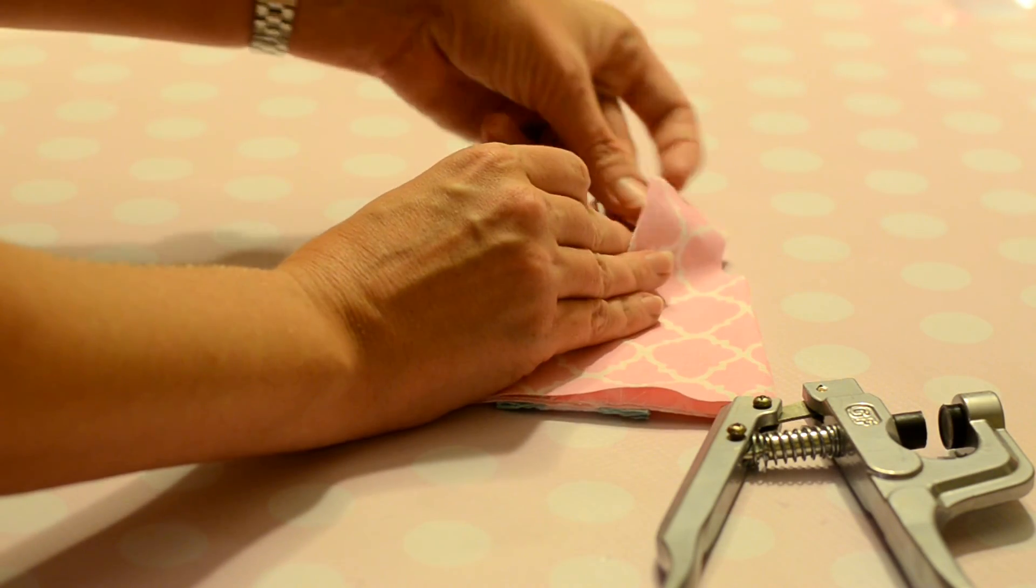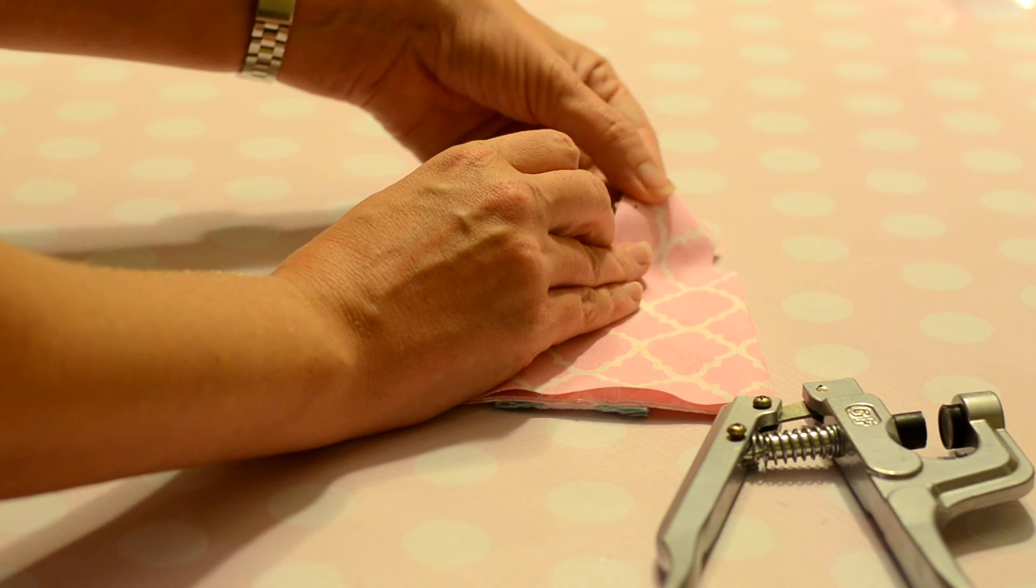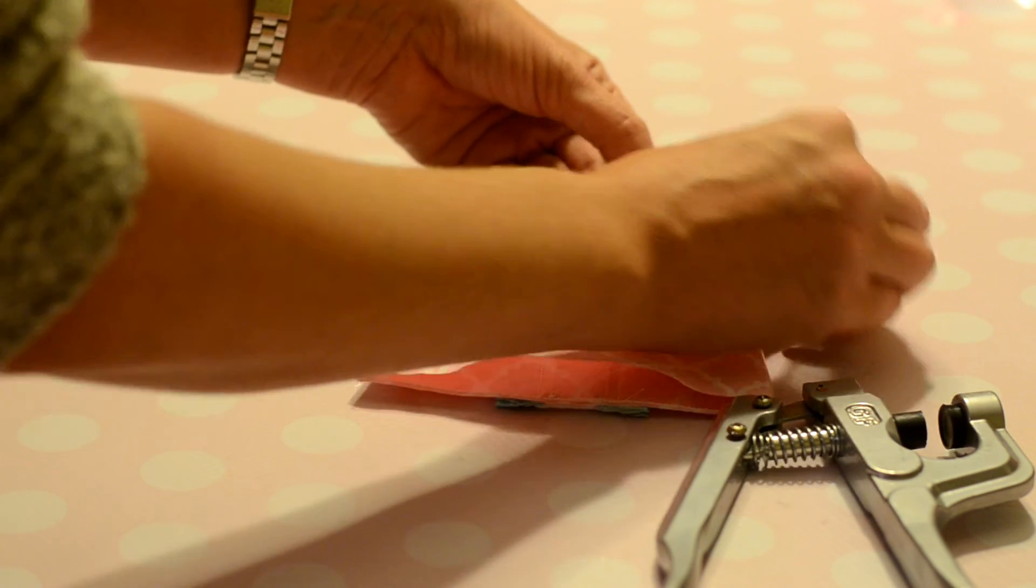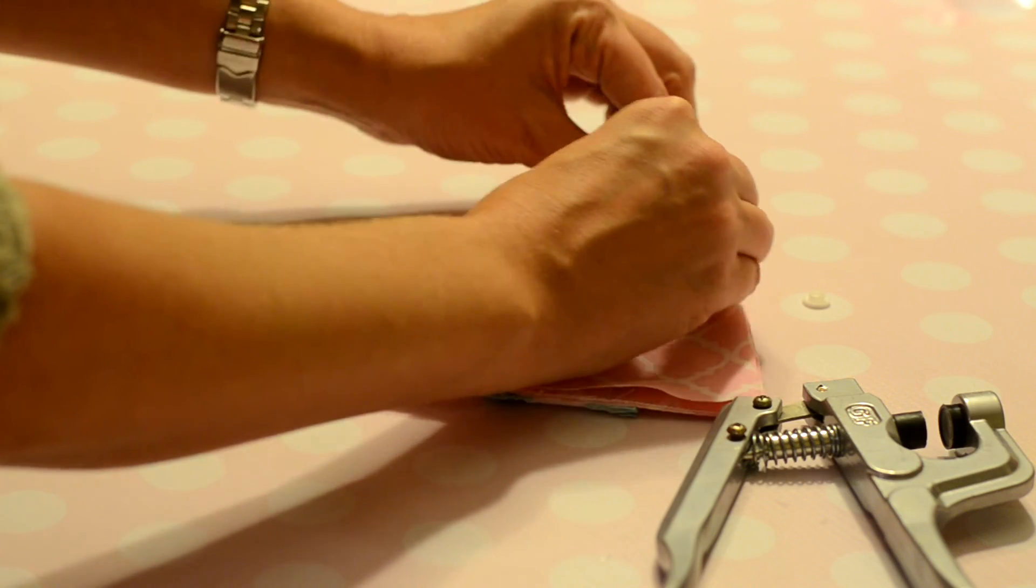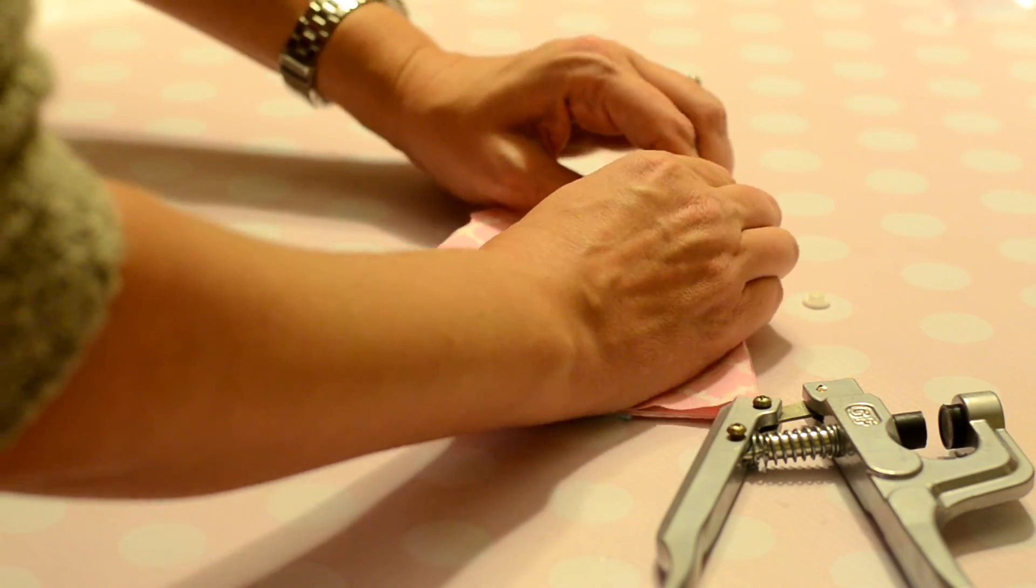Snap pliers come with instructions on how to apply the snaps, but the main thing is that one is oriented facing up and the other one is facing down.